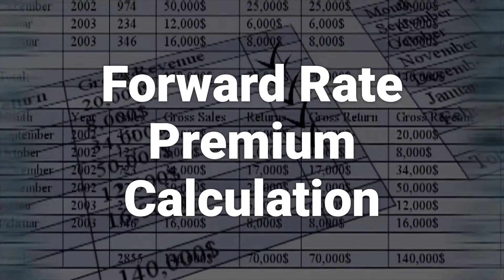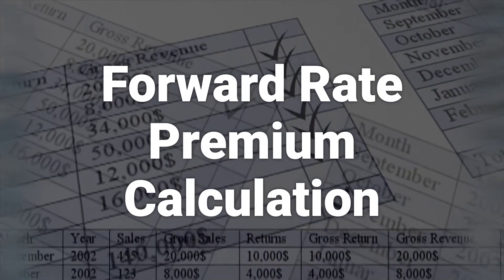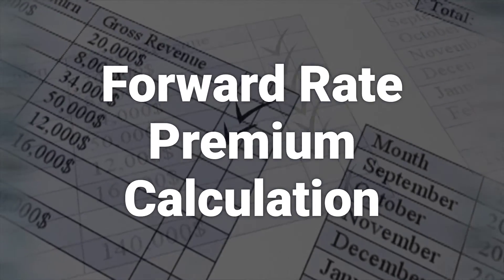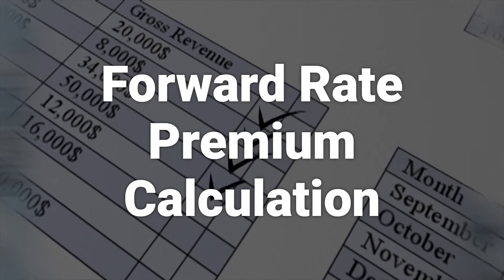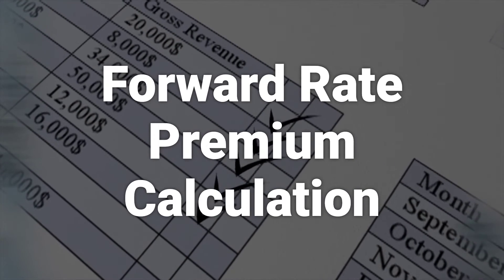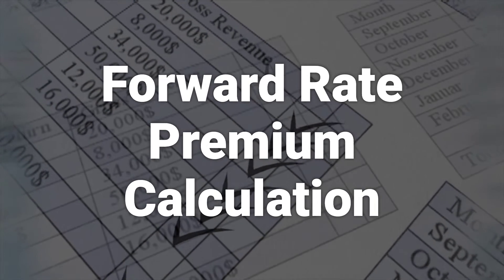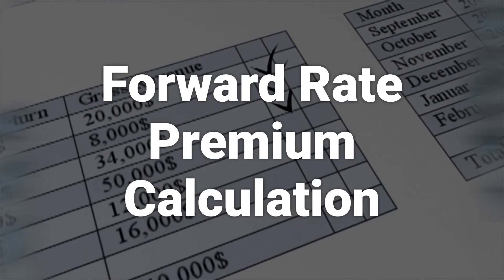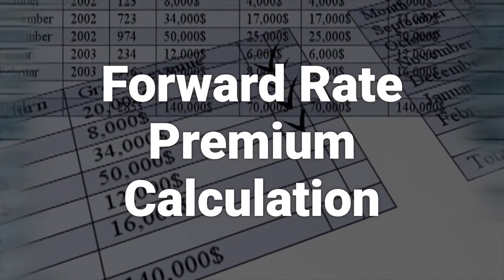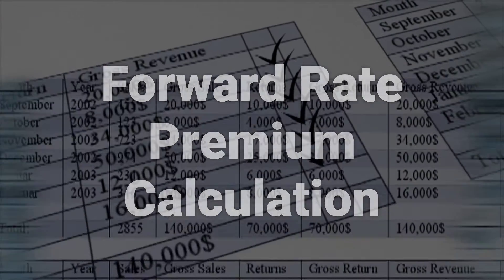The basics of calculating a forward rate require both the current spot price of the currency pair and the interest rates in the two countries. To calculate the forward rate, multiply the spot rate by the ratio of interest rates and adjust for the time until expiration.